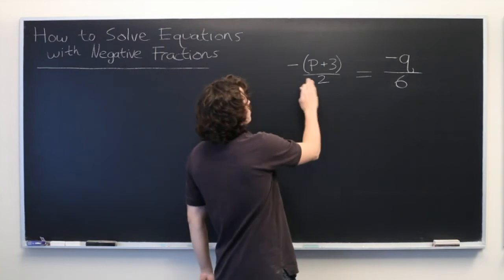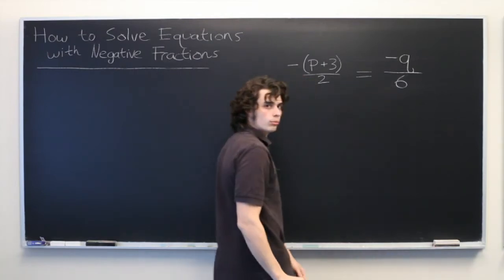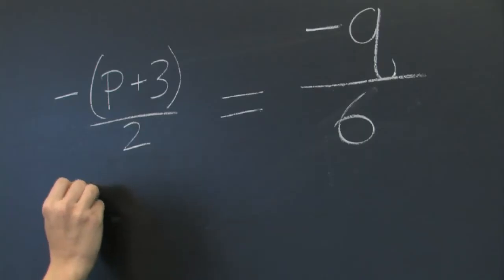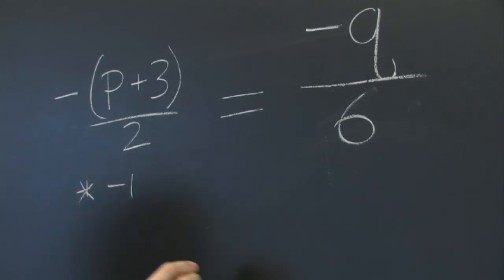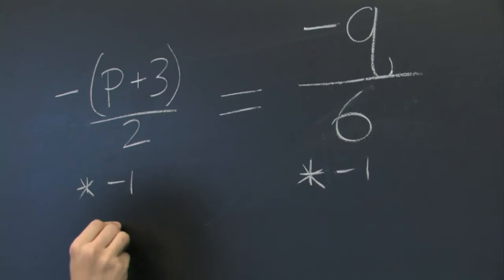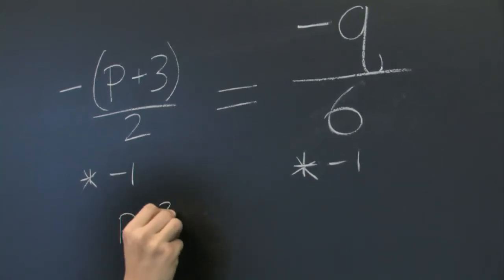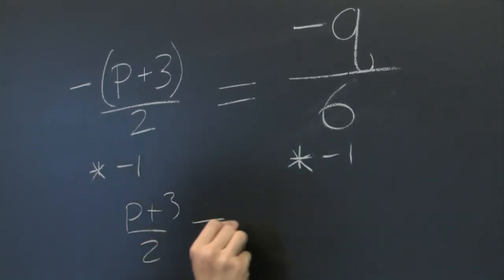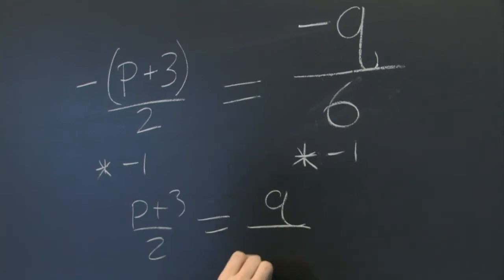So, since we have a negative sign on both sides of the equation, we can multiply by negative 1 on both sides to cancel them. And we're left with p plus 3 over 2 equals q over 6.